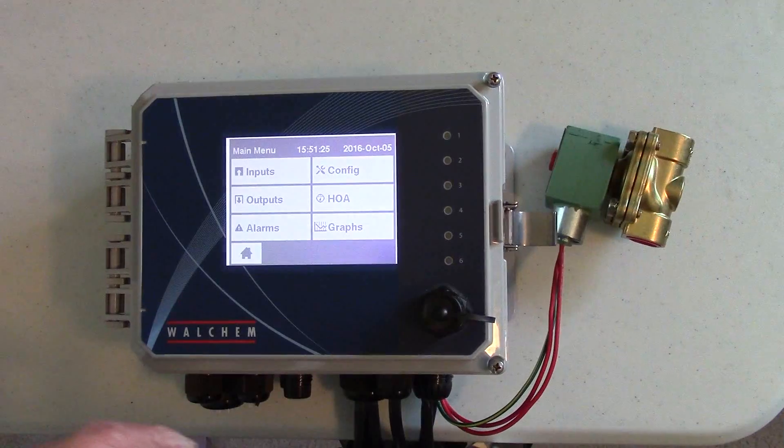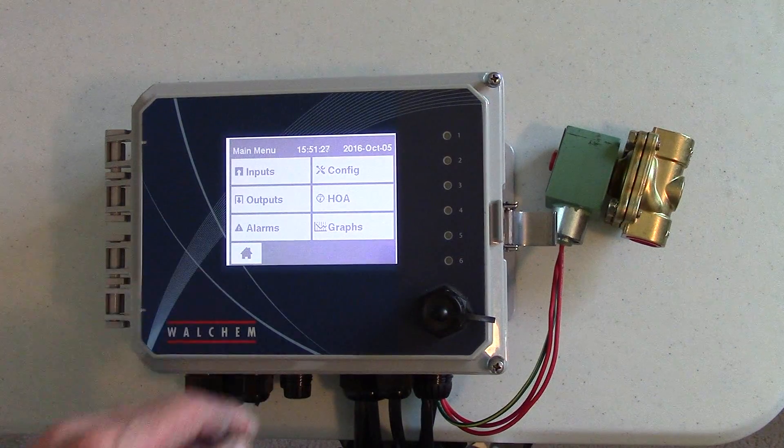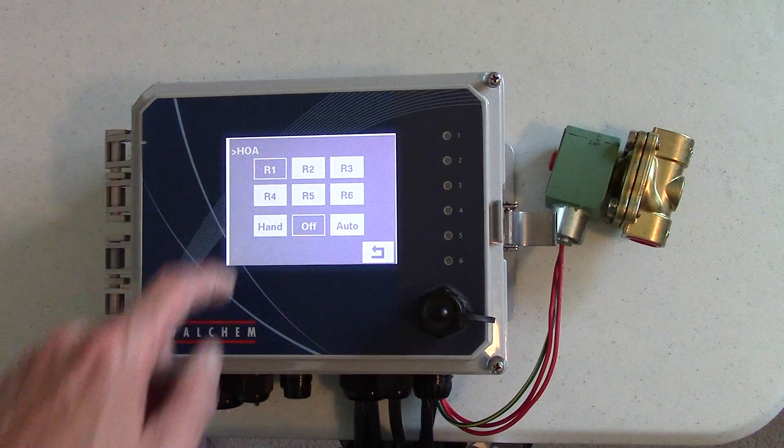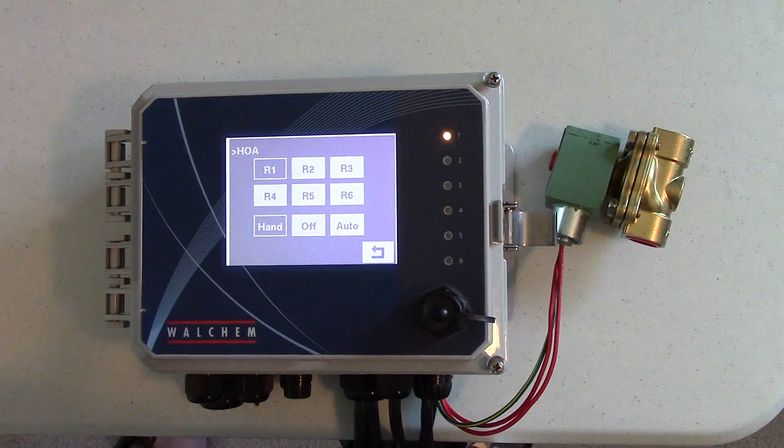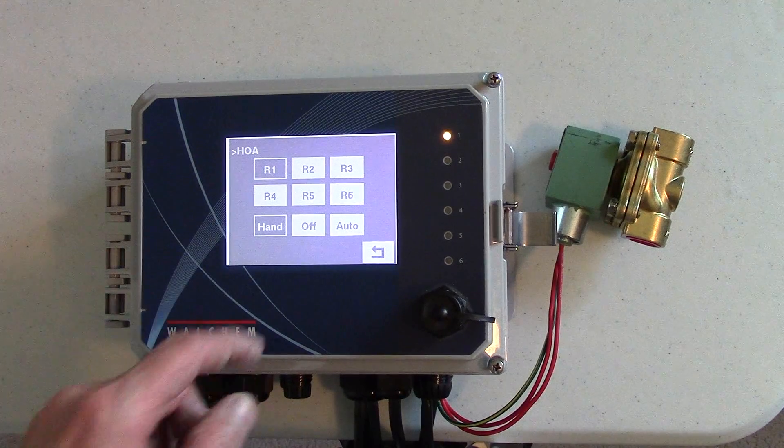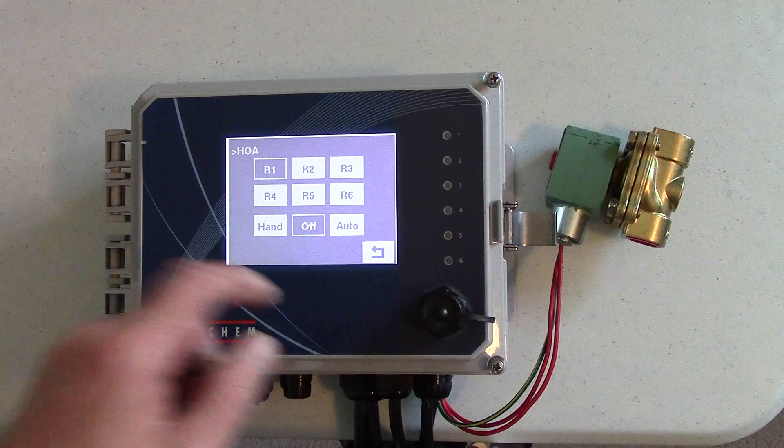Okay, so now I have the solenoid valve all wired up and I'm going to test it to make sure it's all correct. It's on relay one. Mode is off. I'll turn it on hand. There's the valve opening and the valve closing.